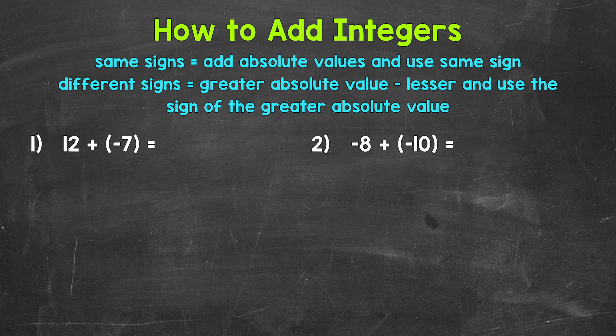Let's jump into number one, where we have 12 + (-7). We'll start this problem by taking a look at the signs. We have a positive 12 and a negative 7. So we have different signs, a positive and a negative. Since we have different signs, we are going to take the greater absolute value and subtract the lesser.